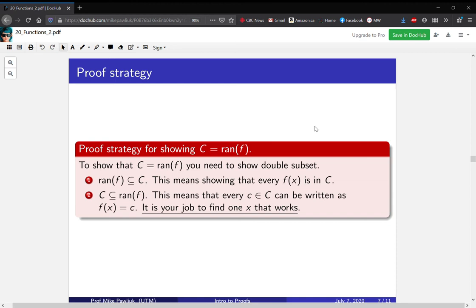The second one is to show that C ⊆ ran(f). What this means is that for every little c in C, it can be written as f(x) = c. It's your job to find one x that works. This is usually the harder direction because it involves finding an x.